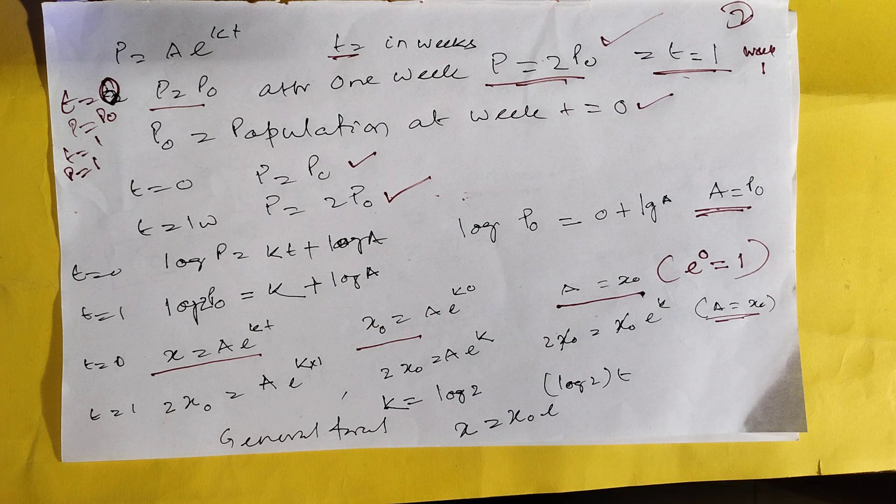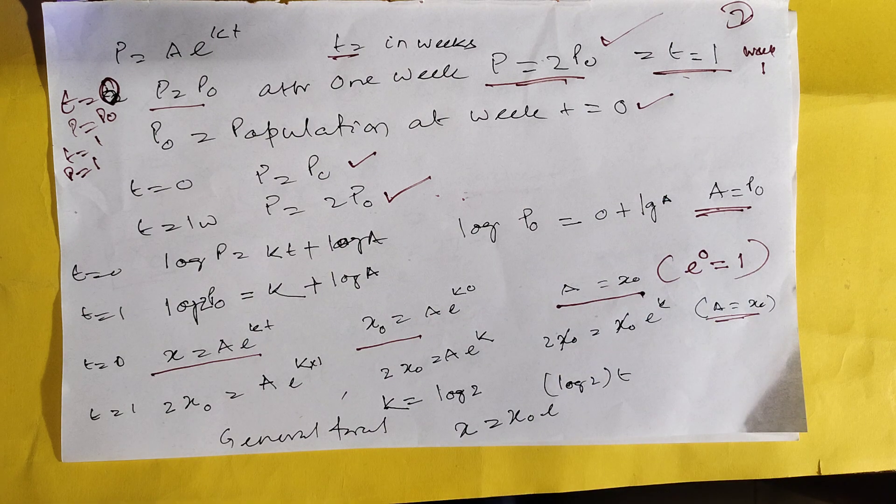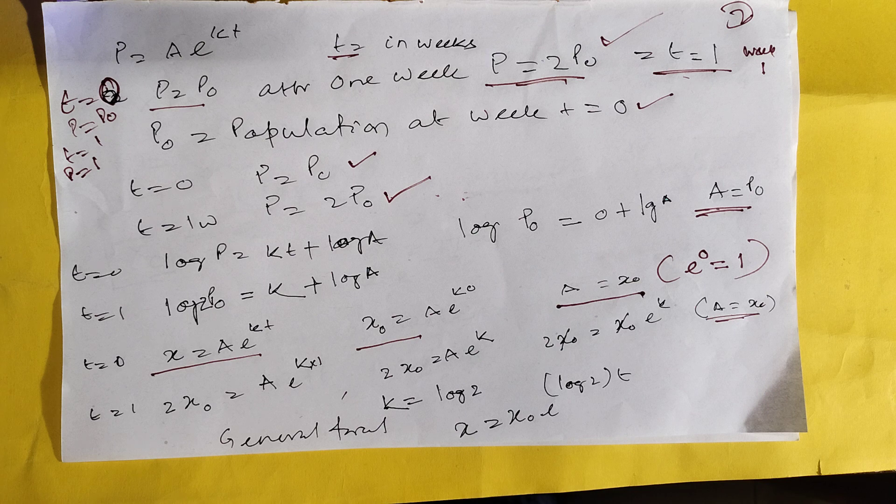So from this we can calculate A is equal to P0, A is equal to P0. And K is equal to log 2, K is equal to log 2. So then this is the general formula.